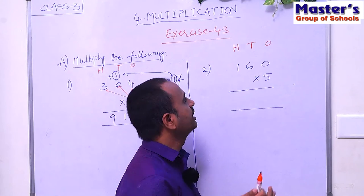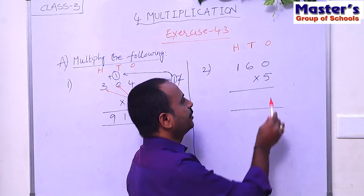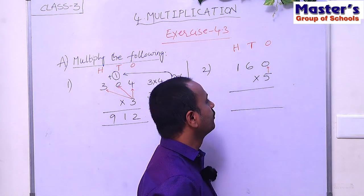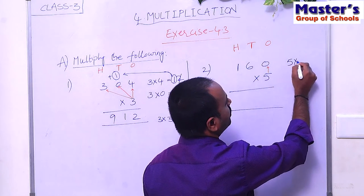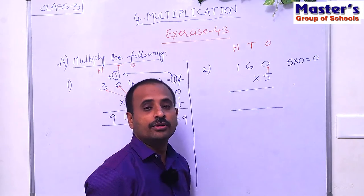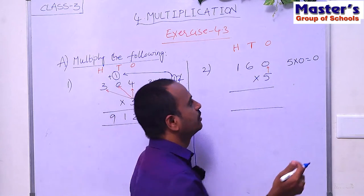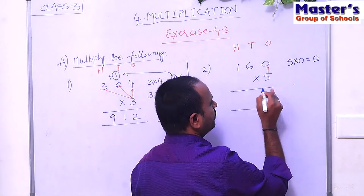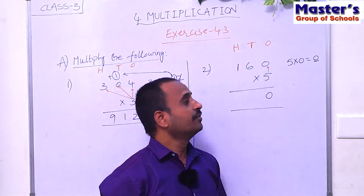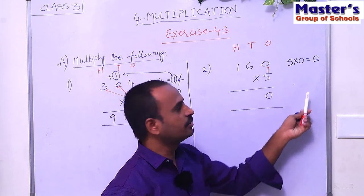116 is a three-digit number and we have to multiply it with 5, a single-digit number. Start multiplication from ones place. The digit in ones place is 0, so multiply 0 with 5 — that is 5 × 0. According to the properties of multiplication, any number multiplied with 0 gives 0. The product is 0, so write 0 under ones place. Since it is a single-digit number, there is no need to carry.